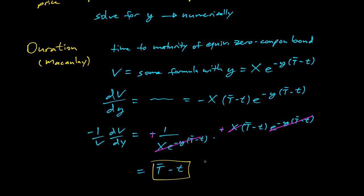So that's the time to maturity of the equivalent zero coupon bond. Pretty cool. So we didn't even need to mess around with the formula too much. We just need to know here, negative one over V, dV/dy is the Macaulay duration.